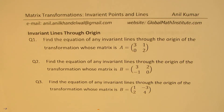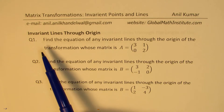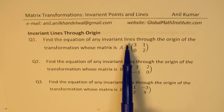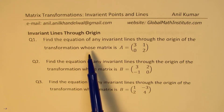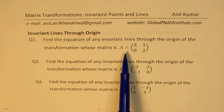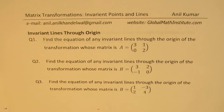You can always pause the video, copy these questions, and work them out. We'll begin with the simple concept and then provide you with the solution. Questions are of the type: find the equation of any invariant lines through the origin of the transformation whose matrix is A equals 2, 3, 0, 1, 2. So we have different matrices and in each case we'll try to find the equation of any invariant lines.